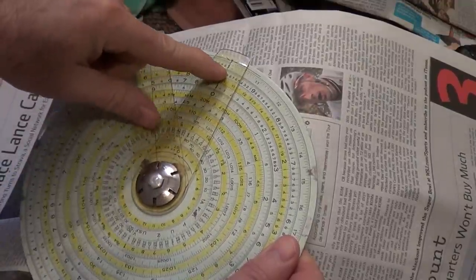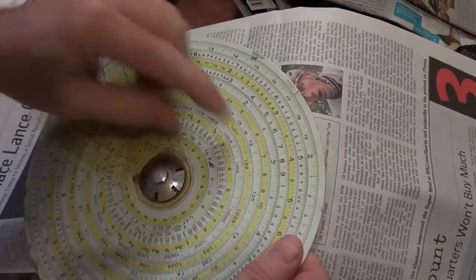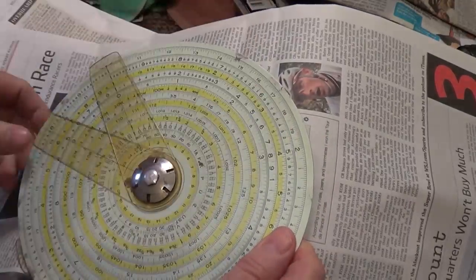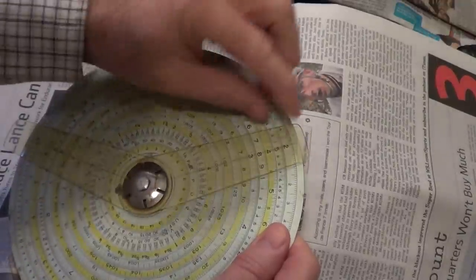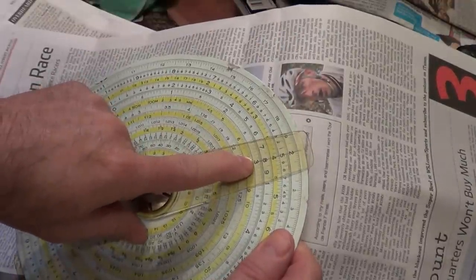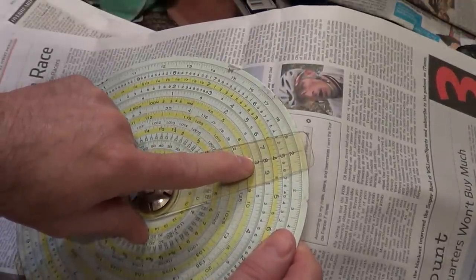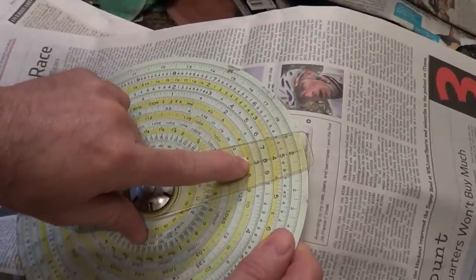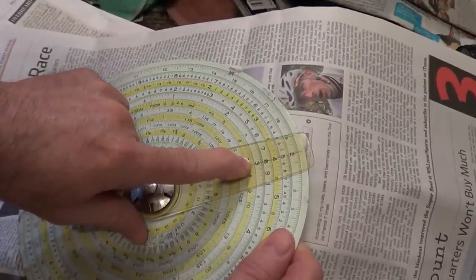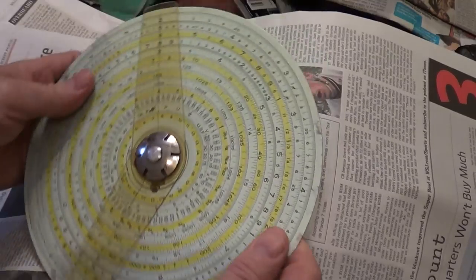The way this works is the C scale—if you read a two over here and you put the cursor over here—the L scale is three. Actually, that's the log base ten of two, which is 0.30103. Or if you go over here to four, it's point six something.